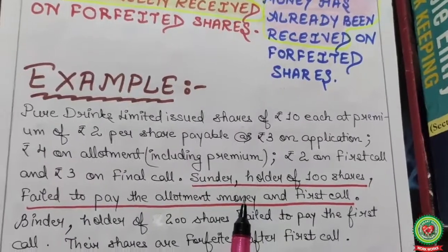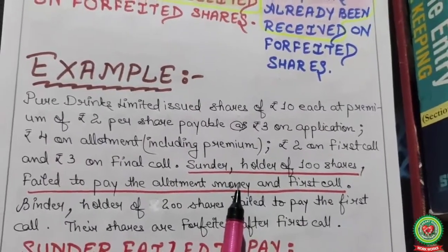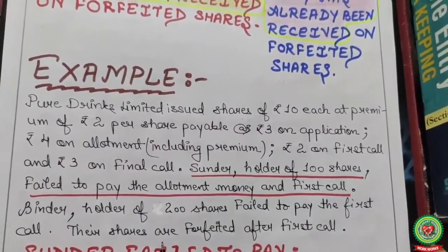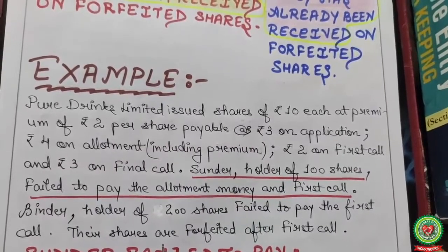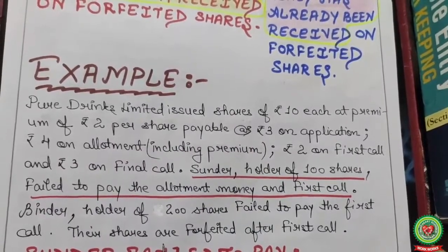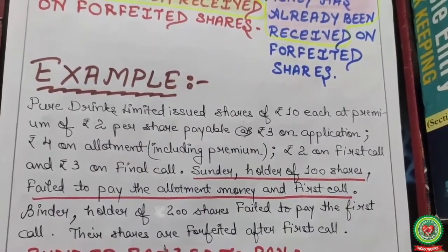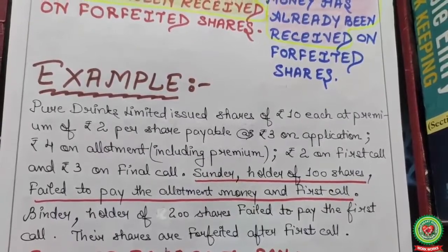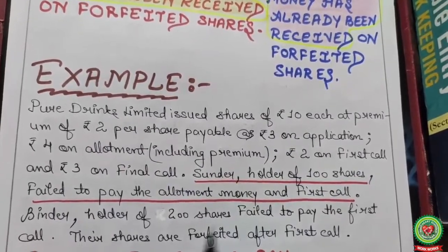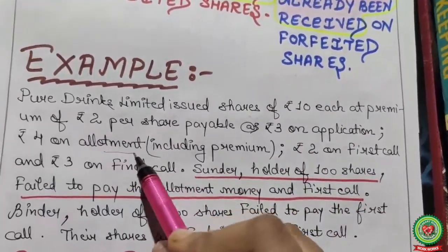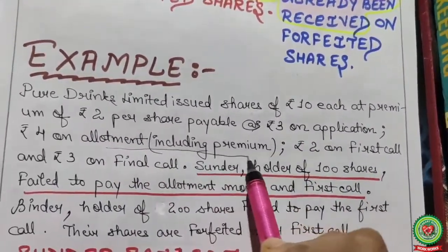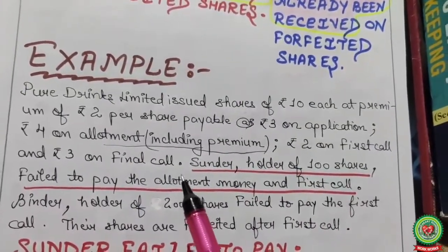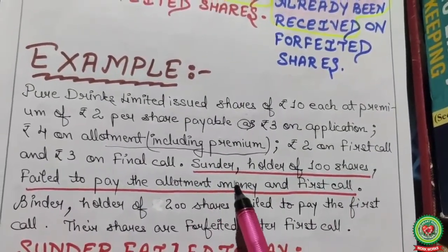Example: Pure Drinks Limited issued shares of rupees 10 at a premium of rupees 2 per share, payable as rupees 3 on application, rupees 4 on allotment including premium of rupees 2, rupees 2 on first call, and rupees 3 on final call.